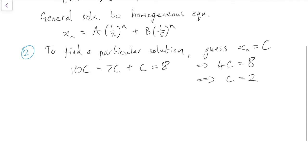So that means the general solution to the inhomogeneous equation is the sum of the two solutions we've found. It's the sum of the particular solution, 2, and the general solution to the homogeneous equation, which was A(1/2)^n + B(1/5)^n.